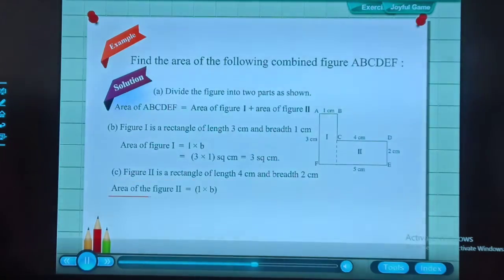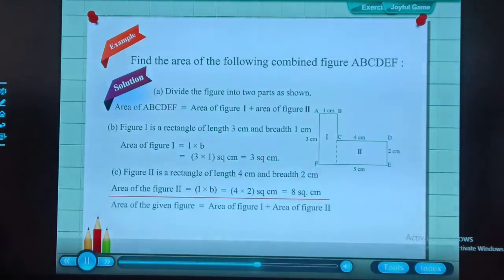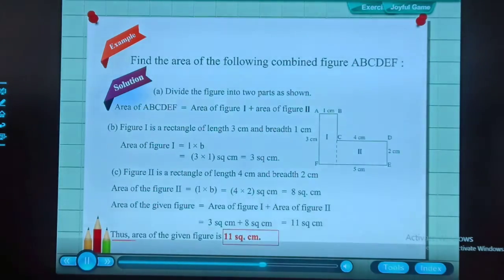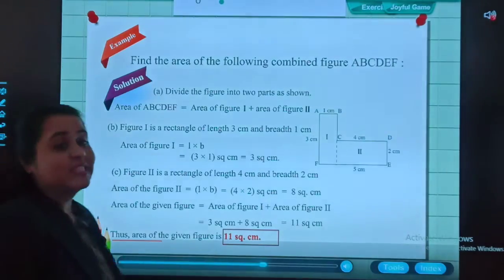Area of figure 2 equals length into breadth, which is 4 × 2 = 8 sq cm. Therefore, area of the combined figure equals area of figure 1 plus area of figure 2, which equals 3 + 8 = 11 sq cm. So students, this part was very easy, right? We find the area of rectangles separately and then add them. This type comes in the examination with the weightage of 2 to 3 marks, so have a look on this also.